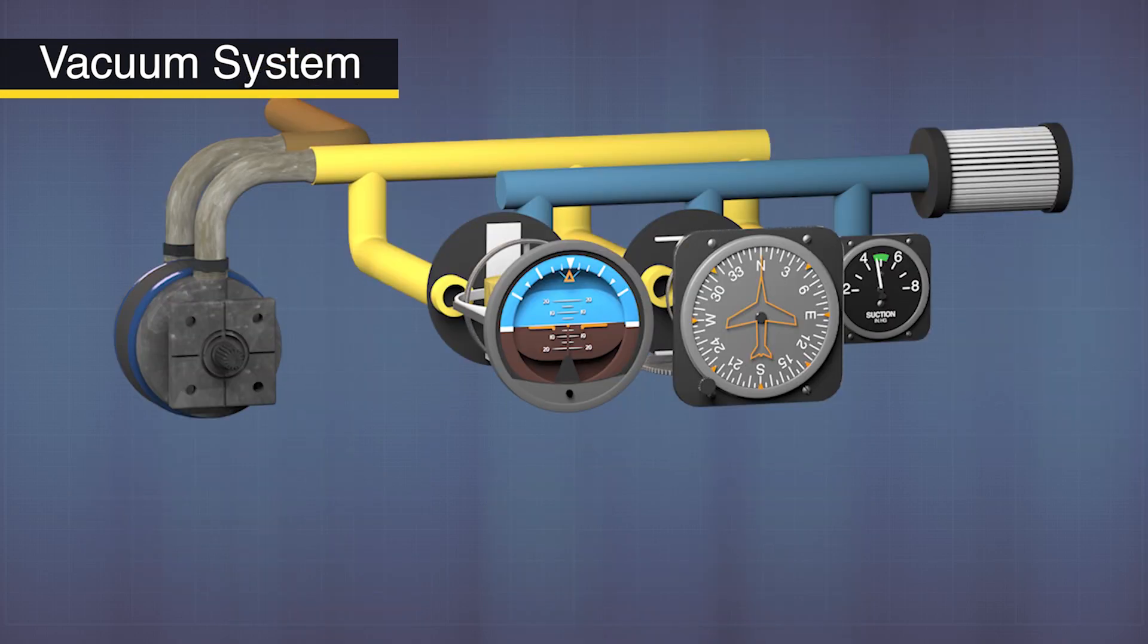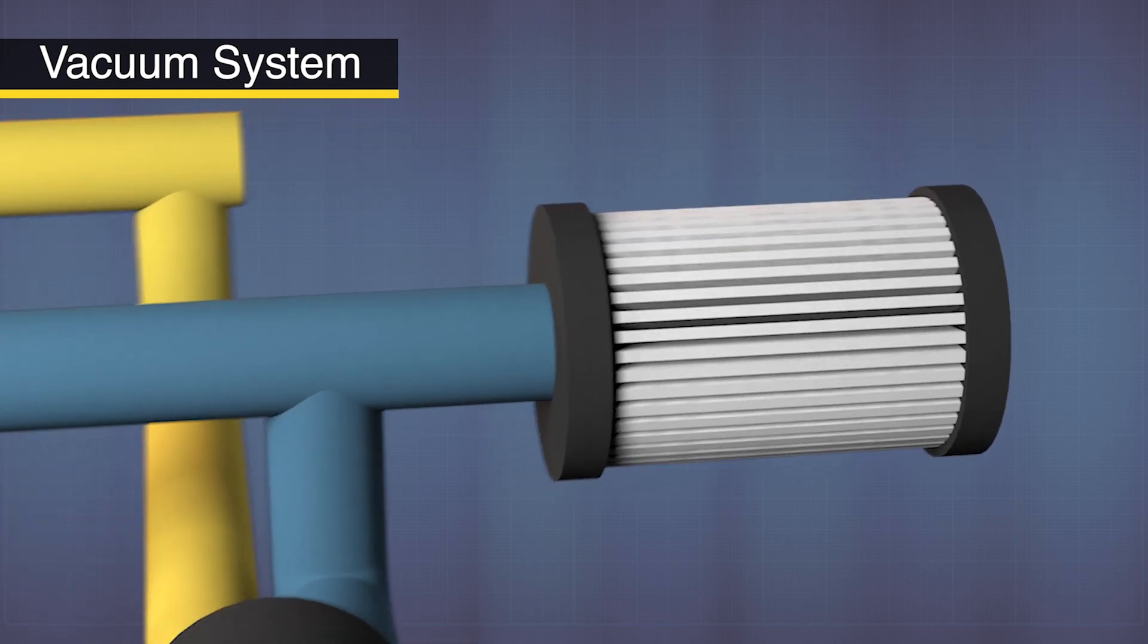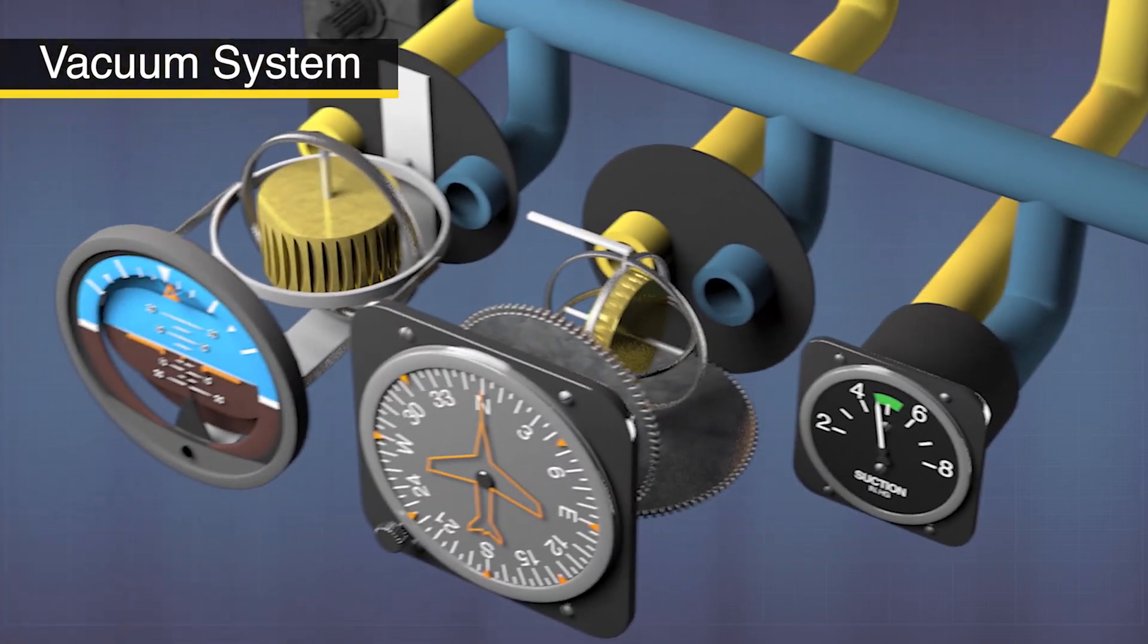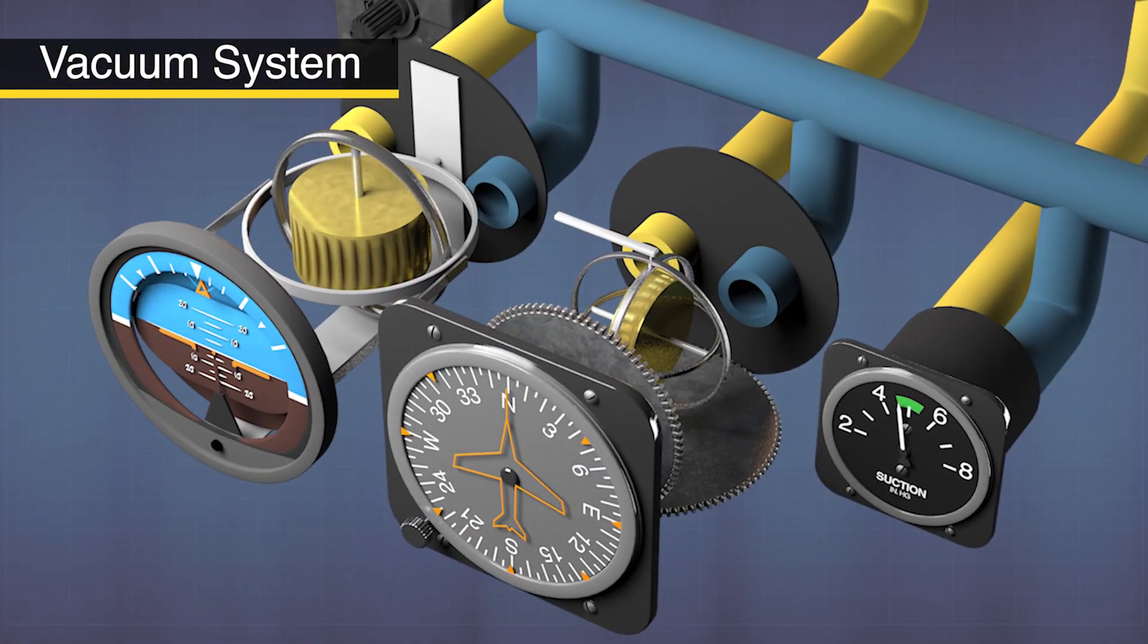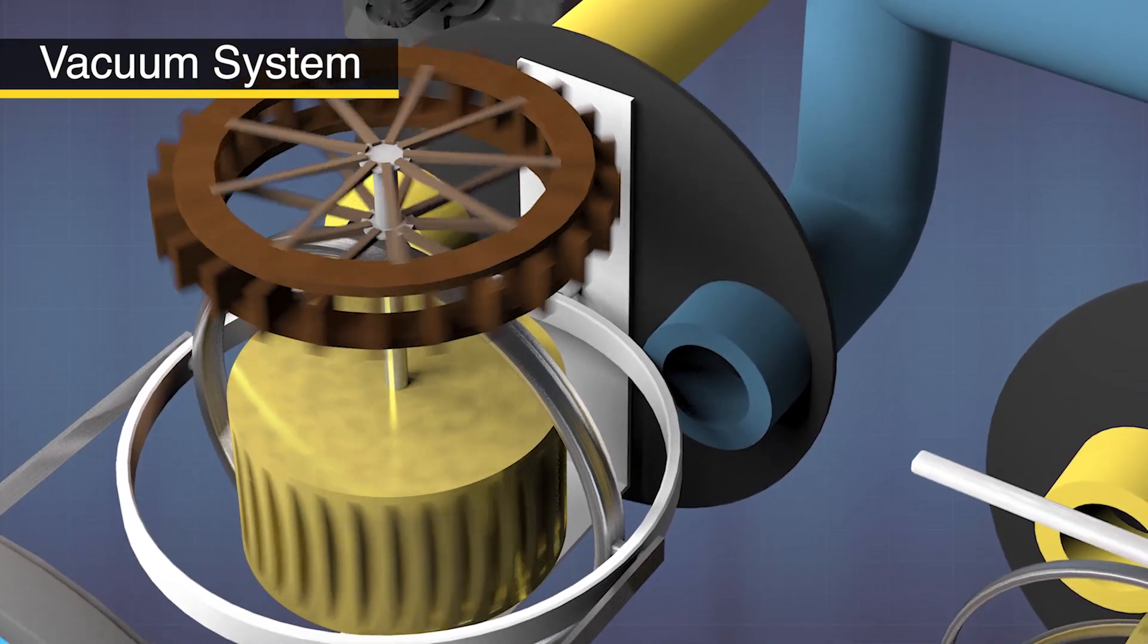The air is pulled through the instruments by a vacuum pump mounted to the engine. The air is first pulled through a central air filter to keep the dirt and debris from clogging the instruments. The air then travels through the instruments themselves, which spin the gyros. Notches around the edges of the gyro catch the air in the same way that water pushes the paddles on a water wheel.